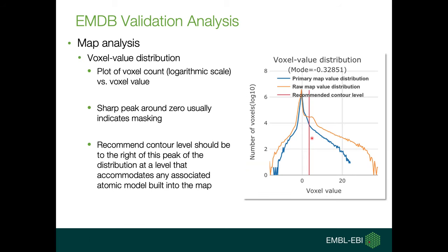In map analysis, the first one is the voxel value distribution. It shows the distribution of voxel values and the position of the recommended contour level. A spike in this graph around zero usually indicates that the volume has been masked. Masking is frequently used to remove background noise from the EM volume, which is quite normal. But interpretation of the map may differ with knowledge about any masking. Mask deposition is not mandatory in EMDB, but it would be great if you could deposit the mask and half maps along with your entries, so that people can benefit from using them for all kinds of analysis.